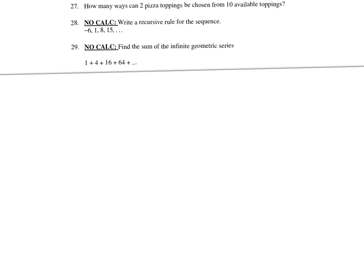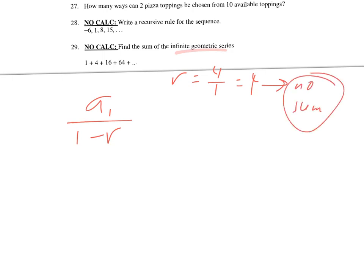Last up, this is an infinite sum, so use the formula a1 over 1 minus r. Tracking r: it's 4 over 1, so r equals 4. Since r is not between negative 1 and 1, there is no sum. The numbers are getting much larger as they go, and we can only compute infinite sums when numbers are getting smaller.